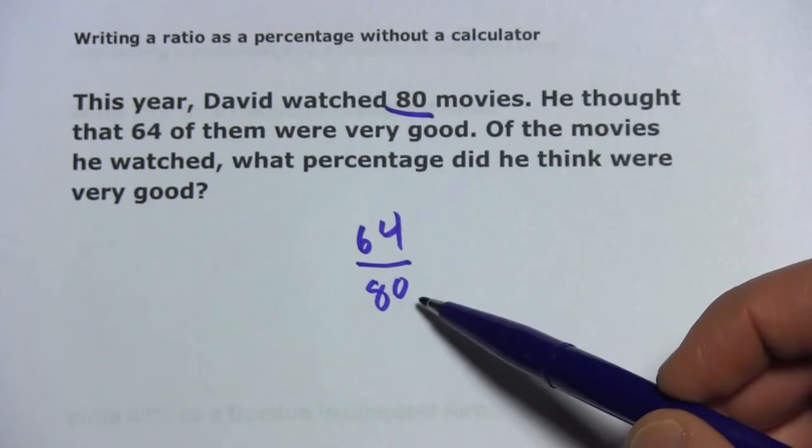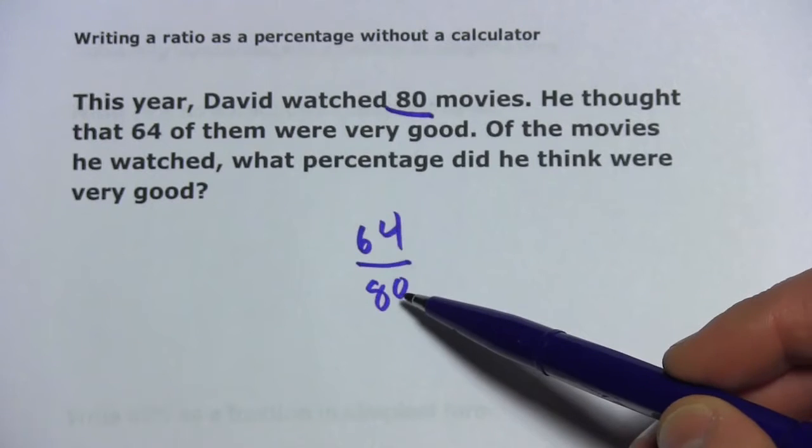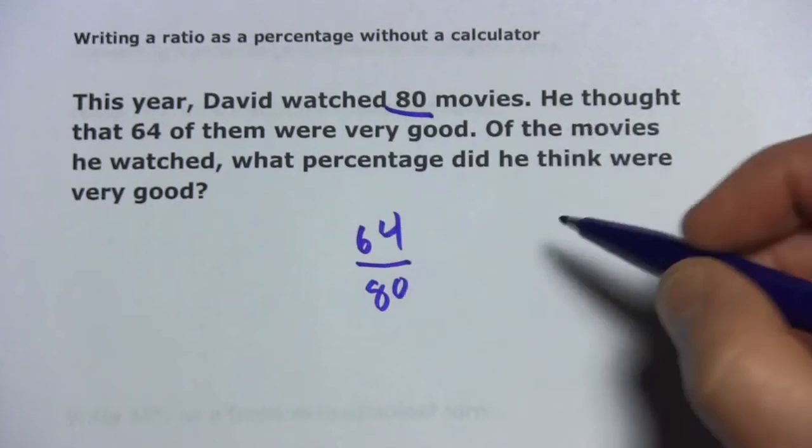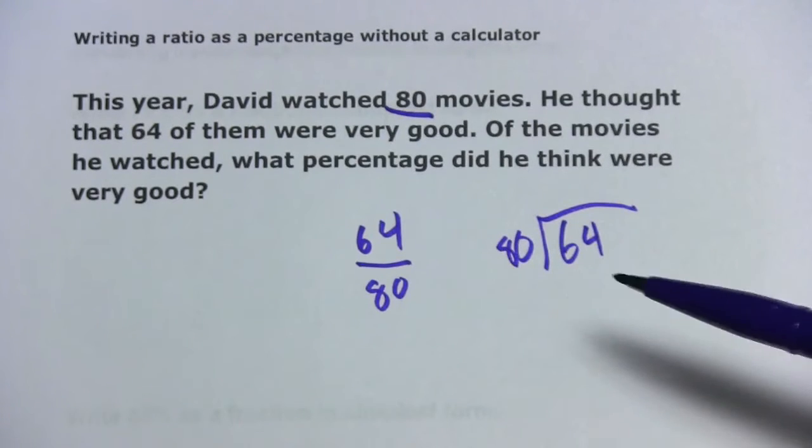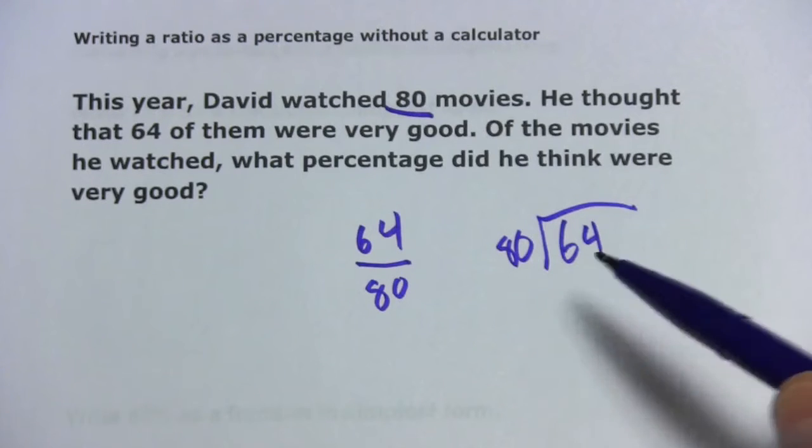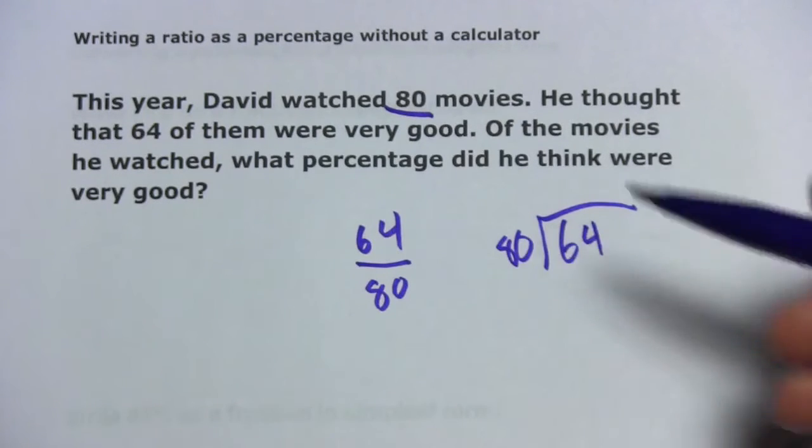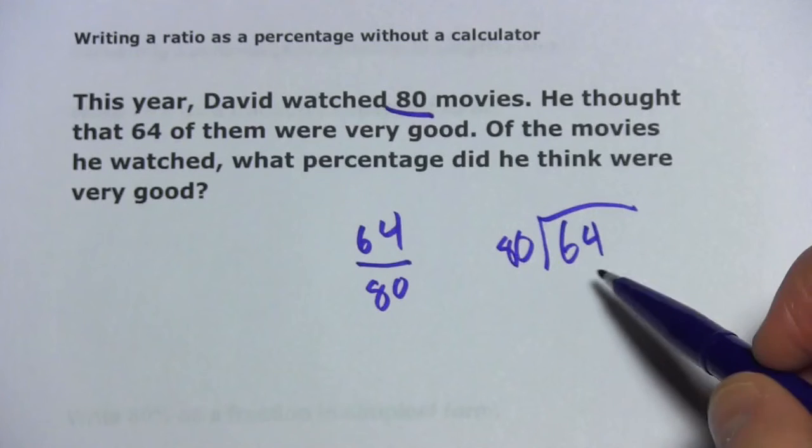Now, we just need to divide because 64 over 80 is the same as 64 divided by 80. And then, we'll need to move our decimal point two places to the right to turn it into a percentage. Because from this division, we'll get a decimal. And we want, eventually, a percent. But let's do the division first.